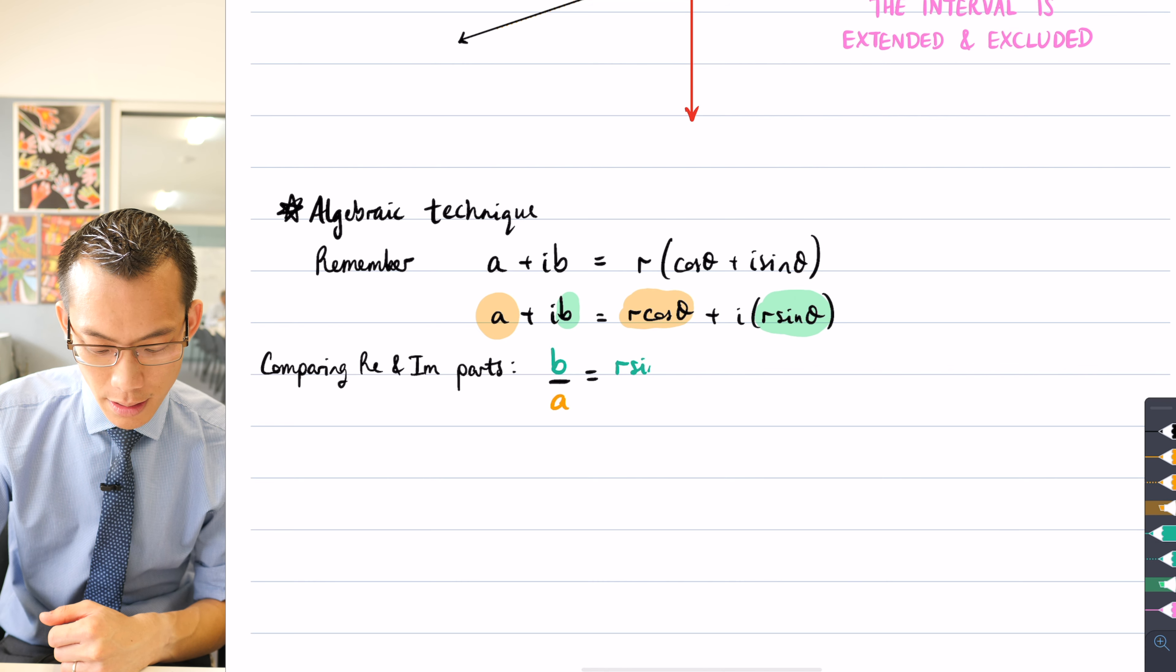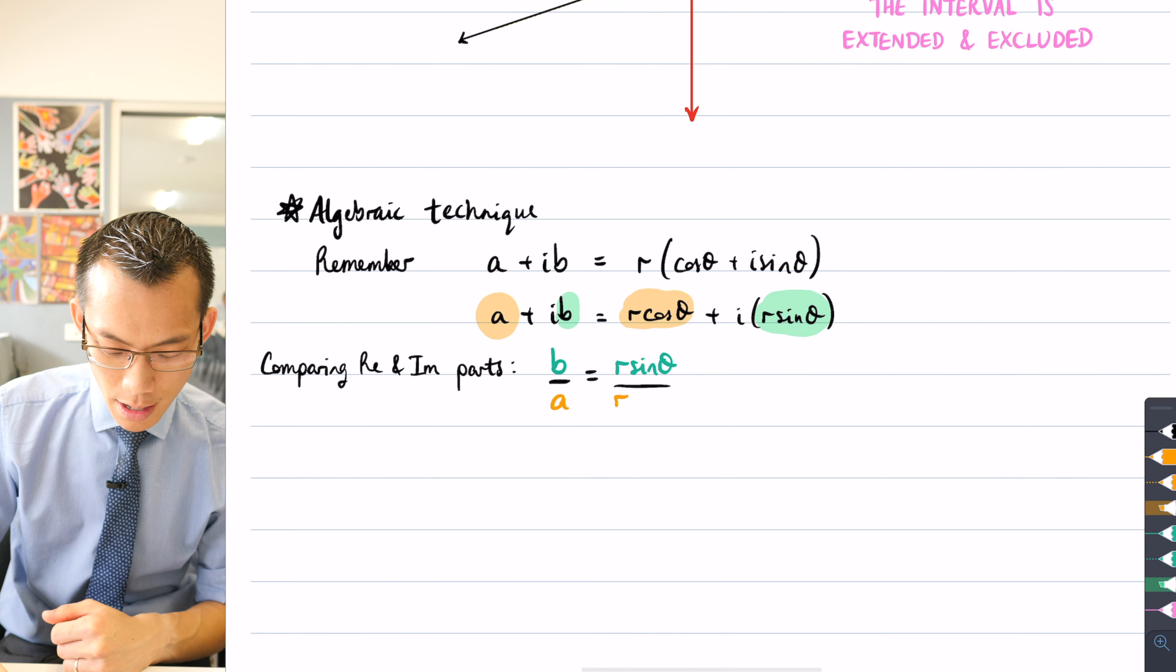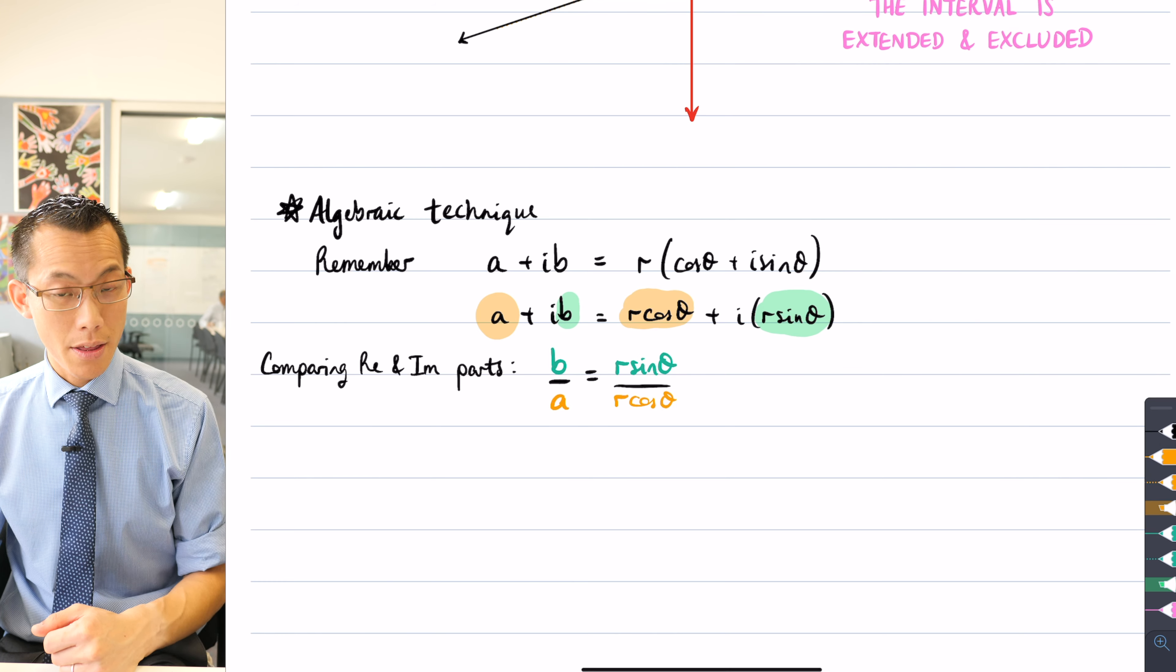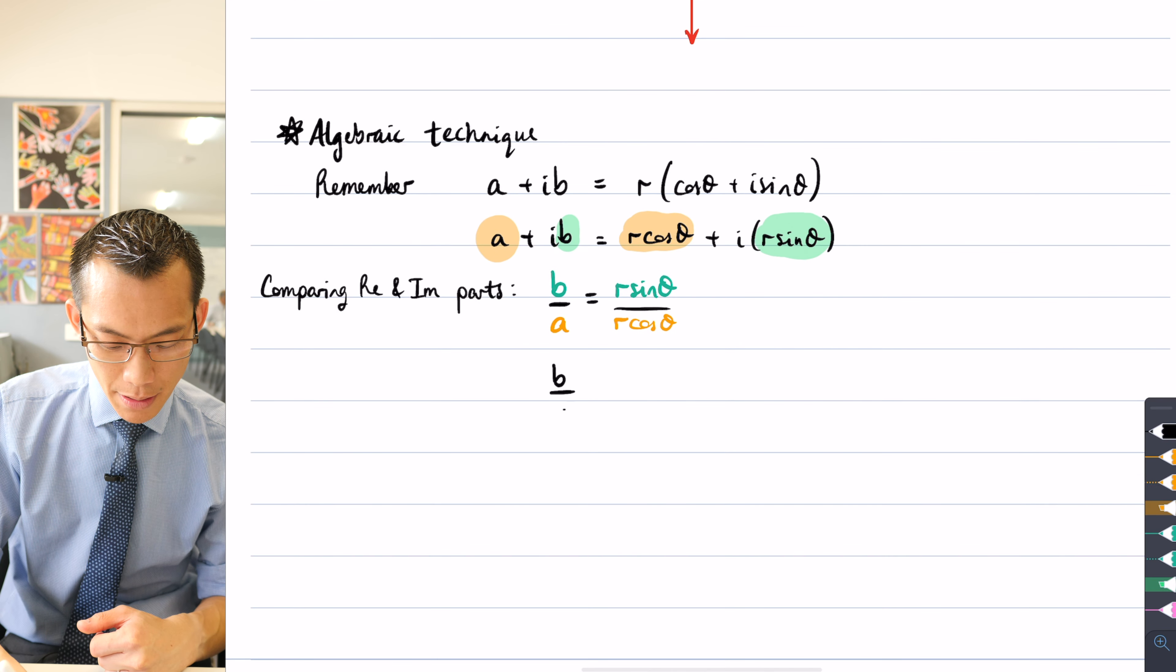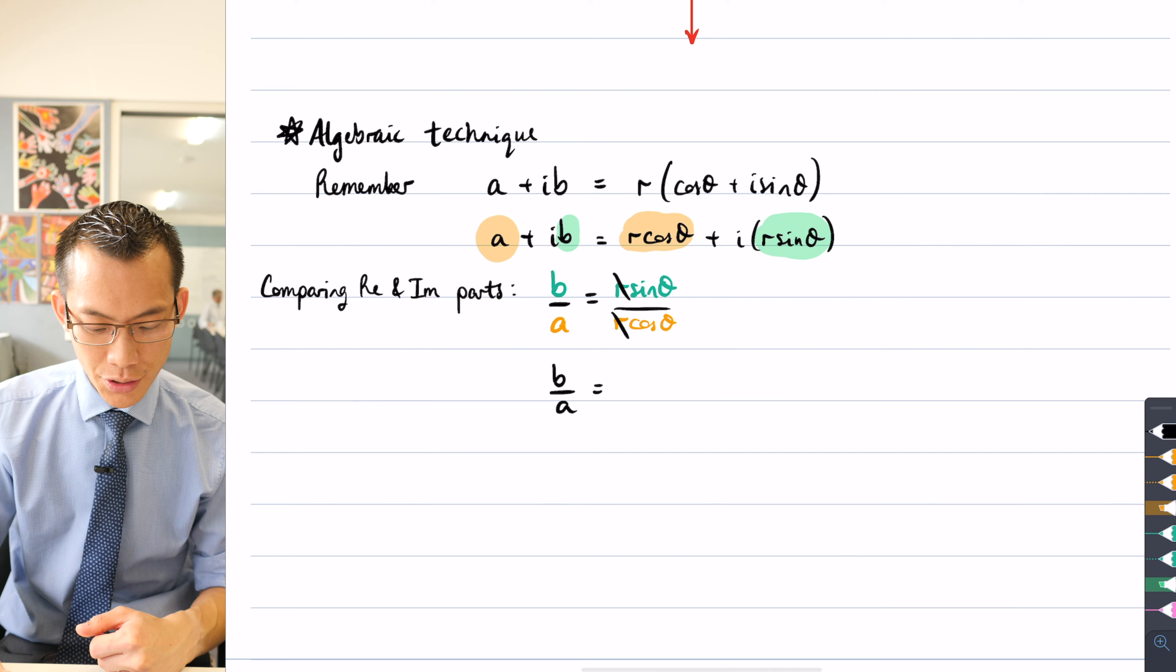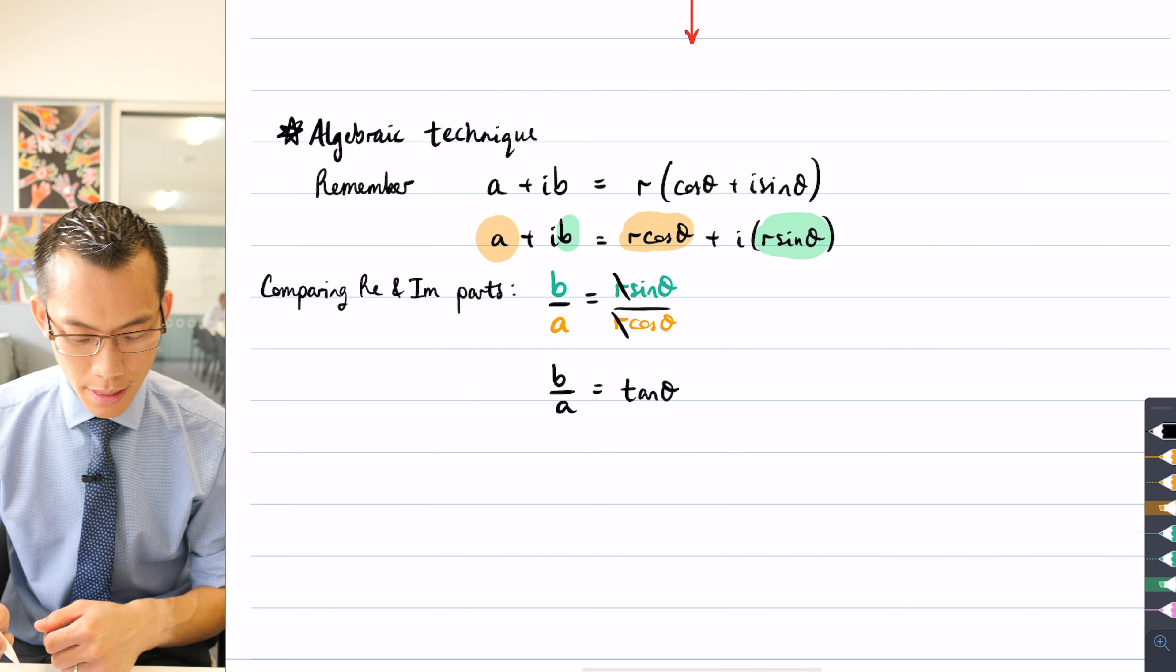So at this point I can simplify this out because I'm getting R's that cancel, one, two, and then sin θ over cos θ, of course I can just write this as tan θ.